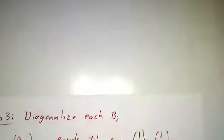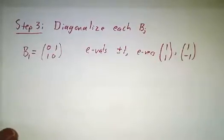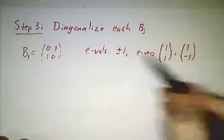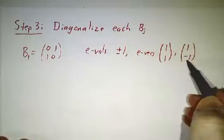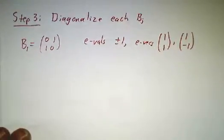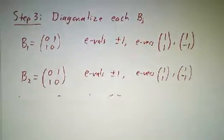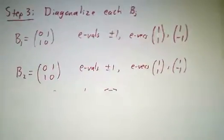Okay. The next step is to diagonalize each block. The upper left block was just 0, 1, 1, 0. We know what the eigenvalues of that are. It's 1 and minus 1. The eigenvectors are 1, 1 and 1, minus 1. And the lower right block happened to look exactly the same, coincidentally. So, same answer.